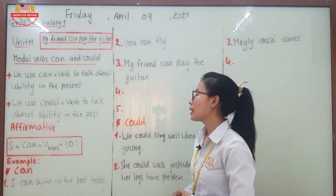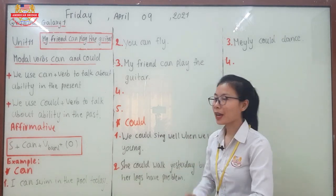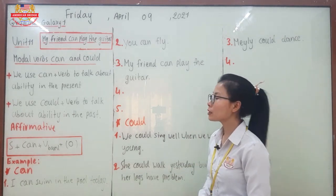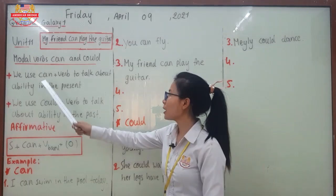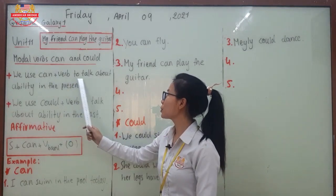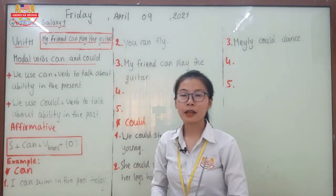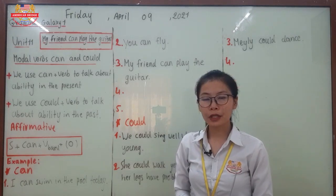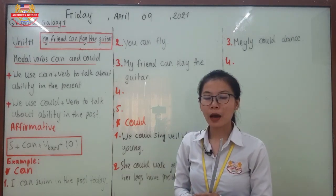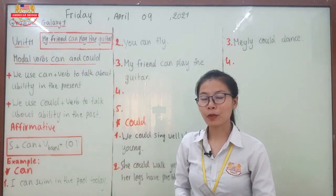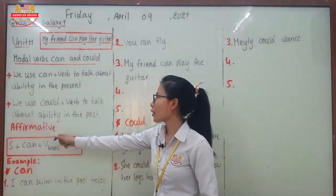Let me explain more about how to use can and could. We use 'can' plus a verb to talk about ability in the present. This means we use it to talk about what you can do and cannot do right now.